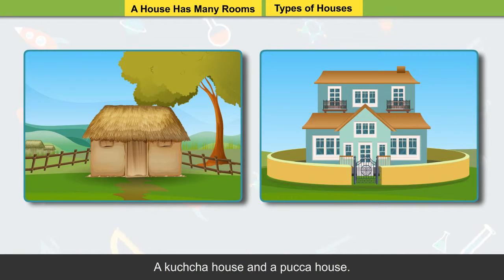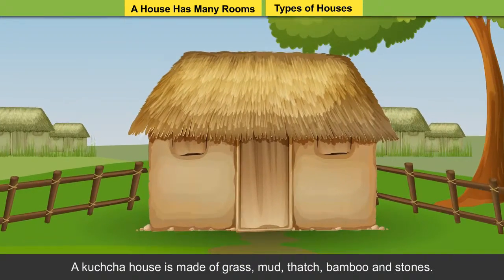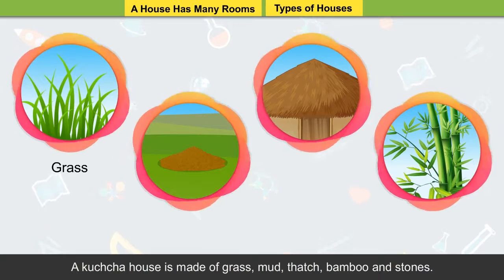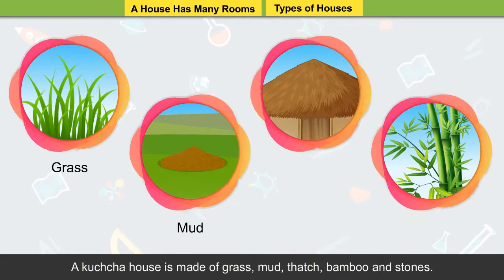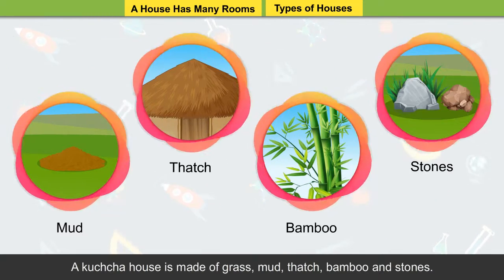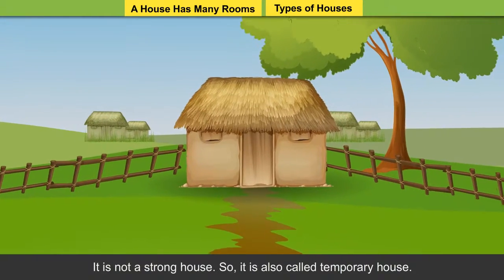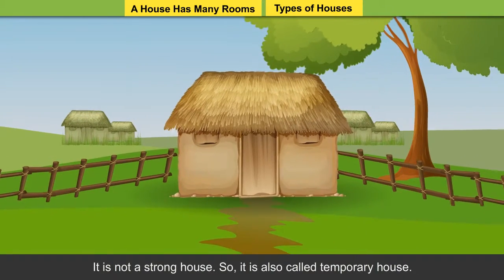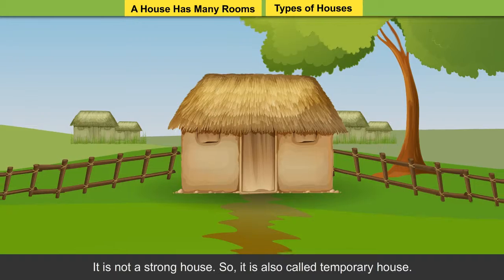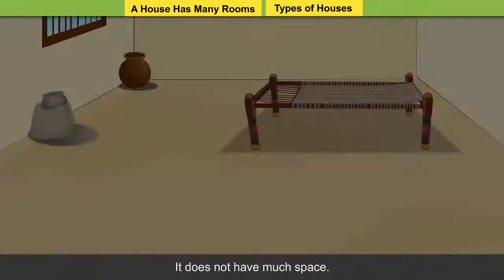There are mainly two types of houses: a kaccha house and a pakka house. A kaccha house is made of grass, mud, thatch, bamboo and stones. It is not a strong house.